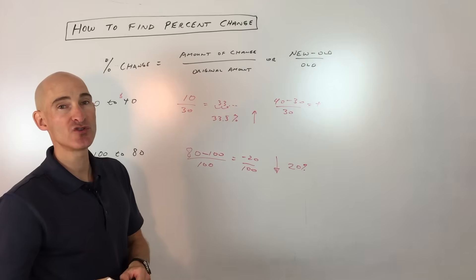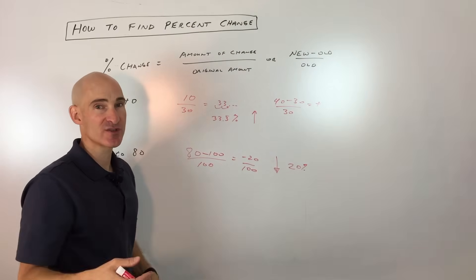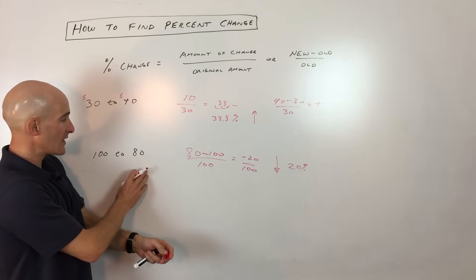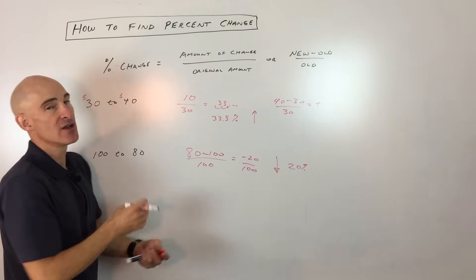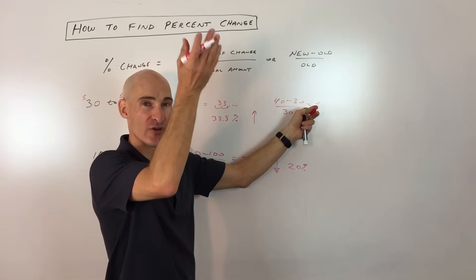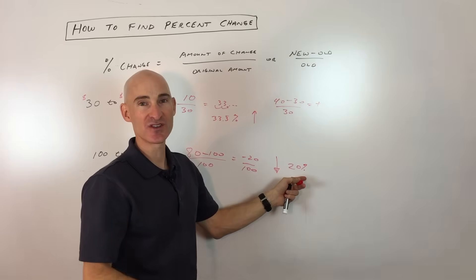And you want to write that when you do your problems - such and such percent increase, such and such percent decrease. Again, you can either look at the original amount - you can see it's going down, here you can see it's going up. Or if you just want to do new minus old over old, positive means going up and negative means decreasing, going down.